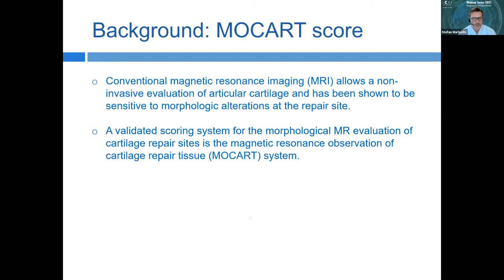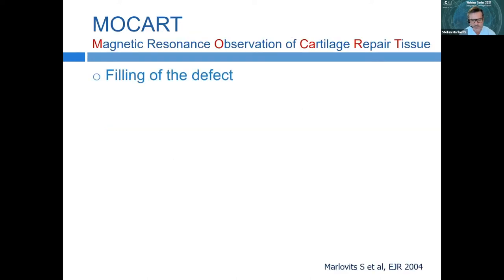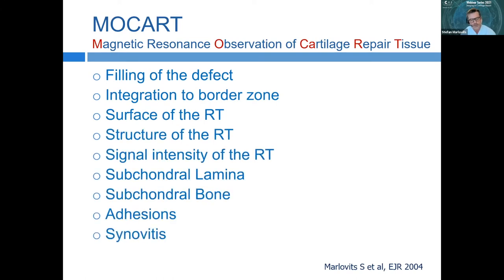For the evaluation of cartilage repair procedures, we developed a validated scoring system called the MOCAD score — a system of nine different variables that is a very useful tool for describing cartilage repair procedures. Its parameters include filling of the defect, structure, surface, description of the bone, and other features in the joint.